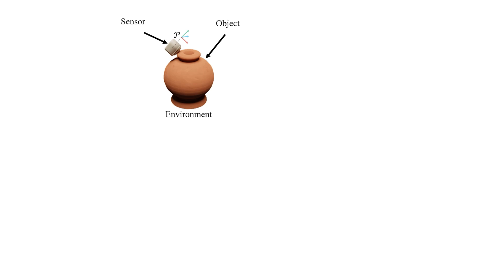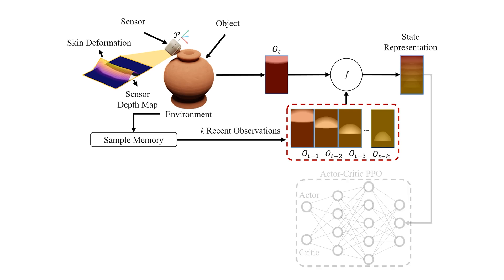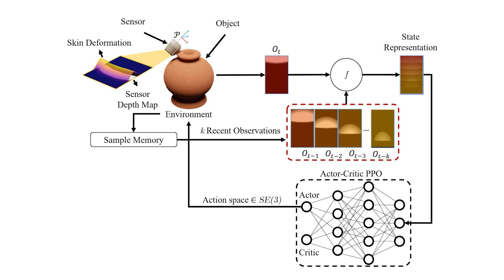Tactile sensor perceives contact geometries as depth maps which will be used as observation at time t for our RL algorithm. We keep a history of interactions in sample memory to encode the temporal information in state representation and will reward actions that align the sensor with the object's surface during extended object exploration.